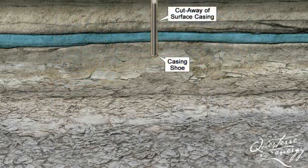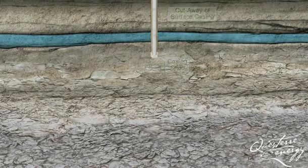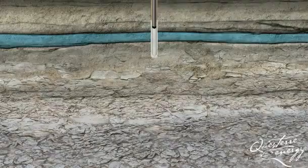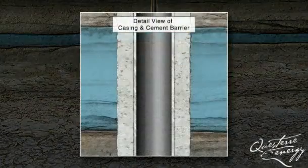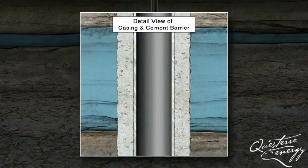Cement is pumped down the casing and out through the opening of the shoe at the bottom of the casing. It is then forced up between the casing and the hole, permanently sealing off the wellbore from the freshwater.